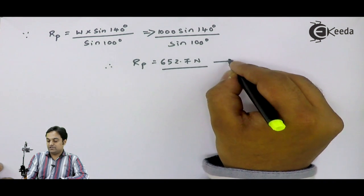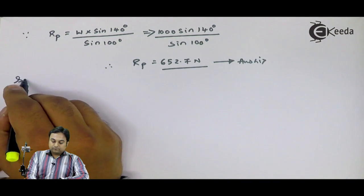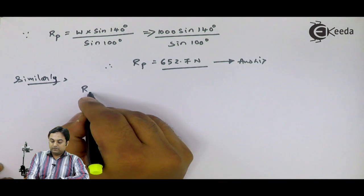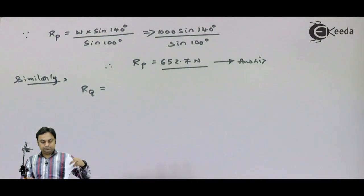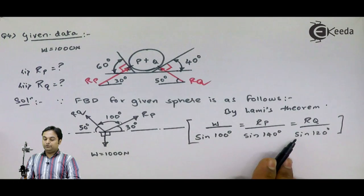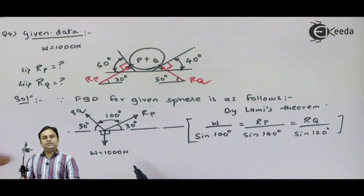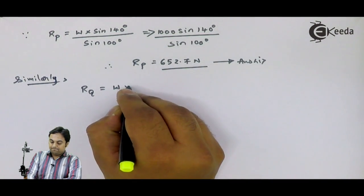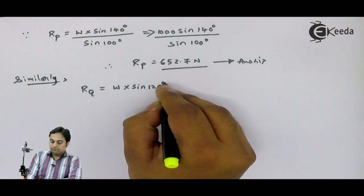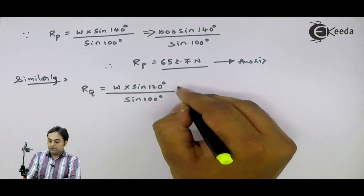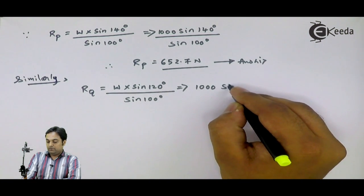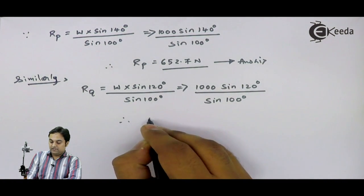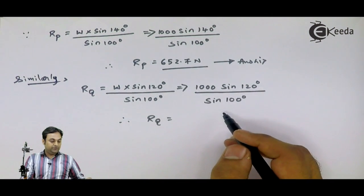Similarly, RQ will be W times sine 120 divided by sine 100 degrees. Weight is 1000, so 1000 times sine 120 degree divided by sine 100 degree. If I calculate all terms here carefully, my answer is 879.39 Newton for reaction at Q.